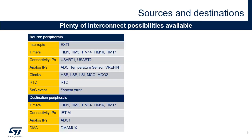This slide indicates the list of source and destination peripherals. Source peripherals are EXTIs, timers, USARTs, analog IPs, clocks, RTC, and system error. Destination peripherals are timers, infrared interface, analog IPs, and DMA mux. The interconnect matrix is further described in the STM32C0 reference manual.